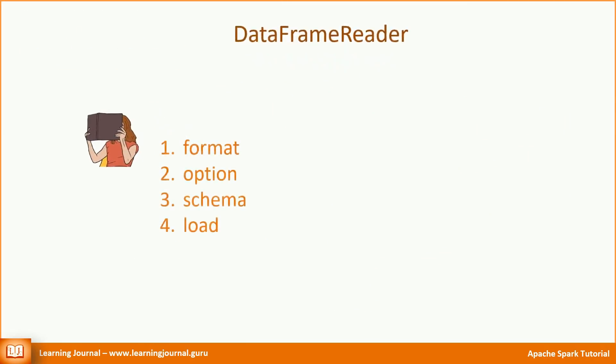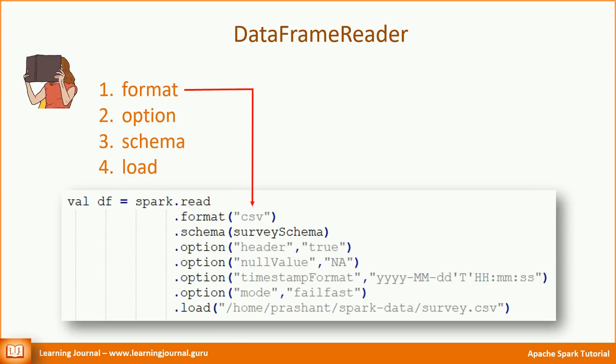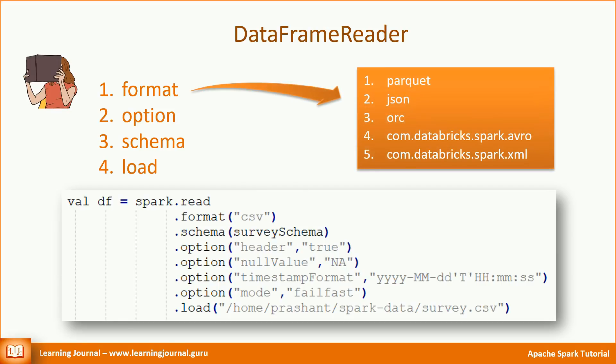We have already used DataFrame Reader for CSVs, so you already know the general structure. For a typical reader, there are four methods: Format, Option, Schema, and Load. We have already seen these in action for CSV. The Format method takes a string to define the data source. The first three formats are part of the Spark core packages; however, the other two are still separate, and hence if you want to use them, you must manage the dependency. Similarly, for other connectors, you should check out their respective documents.